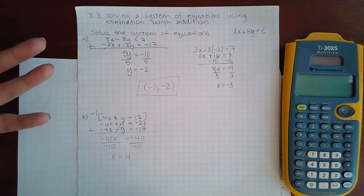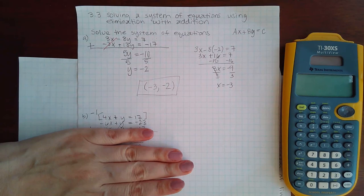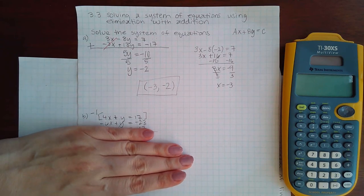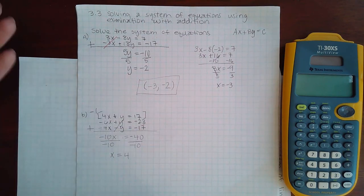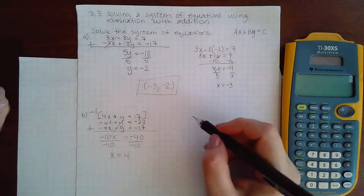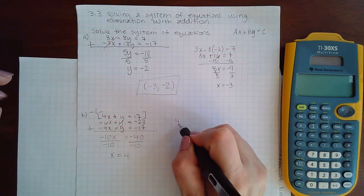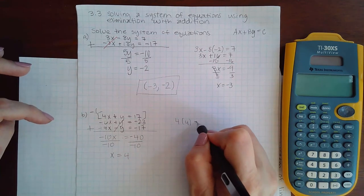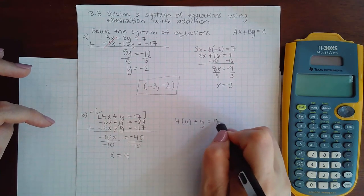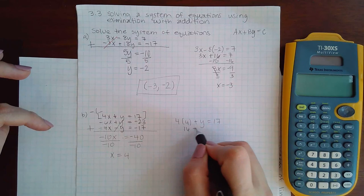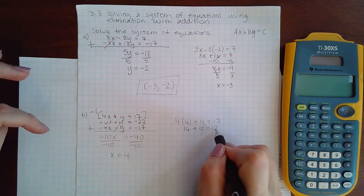How do I find the y value? I would plug x into either of the original equations. I'm going to plug it into the top equation that was inside the bracket. So 4 times 4 plus y equals 17, which gives 16 plus y equals 17.